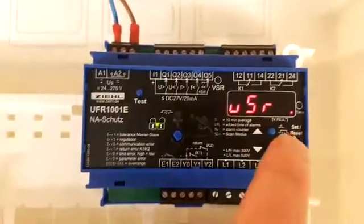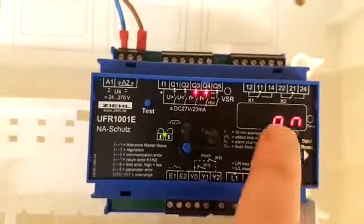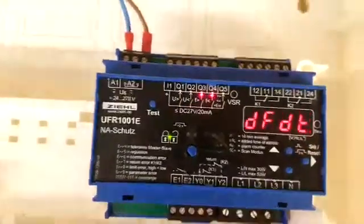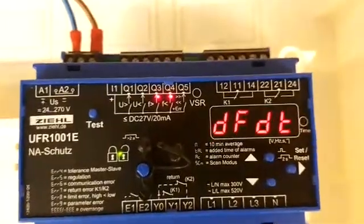Now ROCOF needs to be set. It has to be on, of course, but it also has to be set for the frequency ride through. The DF/DT is set to 1 Hertz.